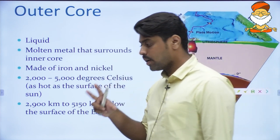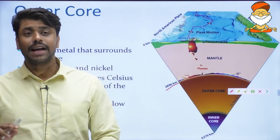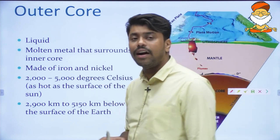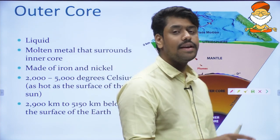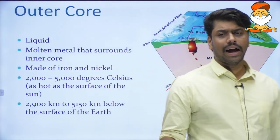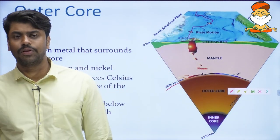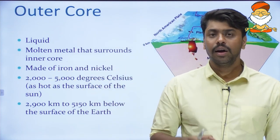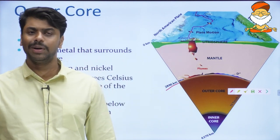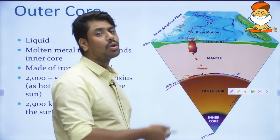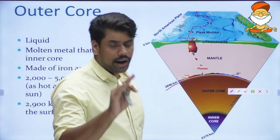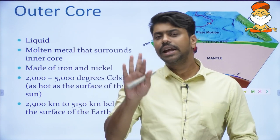From 2900 kilometers to 5150 kilometers is the outer core, which is molten in nature. You might ask: how do we know these exact measurements? Have we gone inside and measured? We will figure that out in the chapter on earthquakes, where we measure direct and indirect sources. Until then, keep that question in mind.